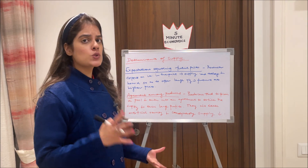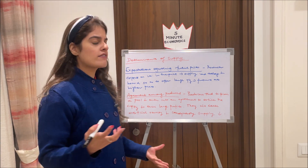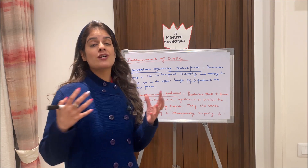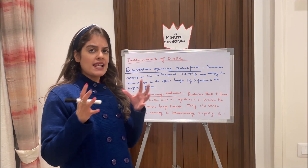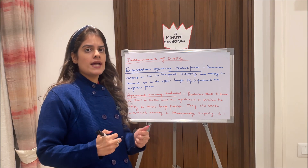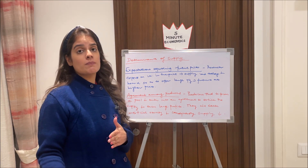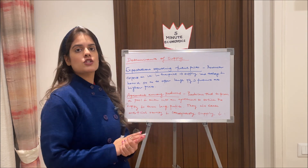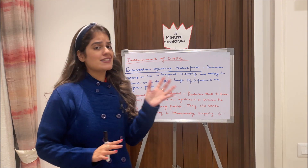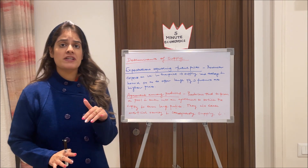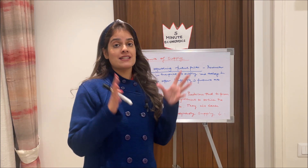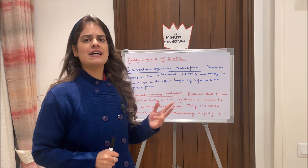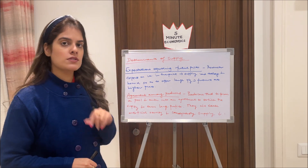Next, expectations regarding future prices. If the producer expects that prices will rise in the future, he will tend to supply less today — hoarding the commodity — because it will be more beneficial to supply in the future when the price is higher. Whereas if he expects prices to fall, he will tend to supply a larger quantity at a higher price in the present moment.